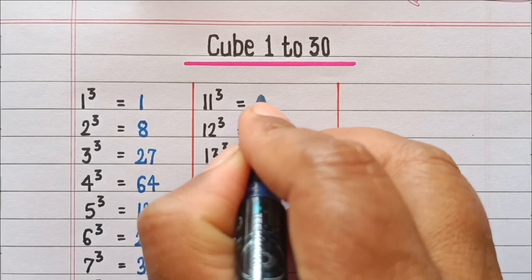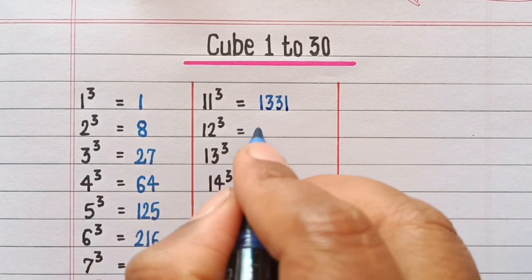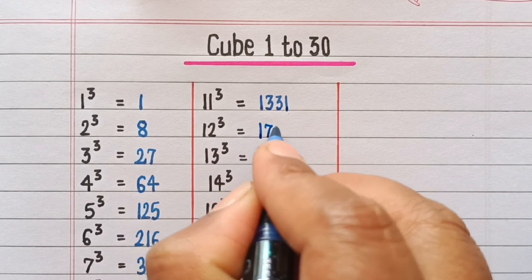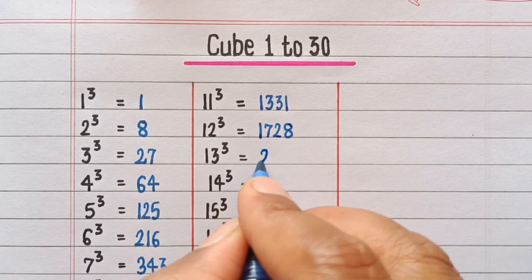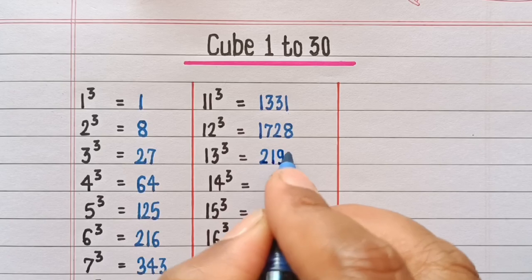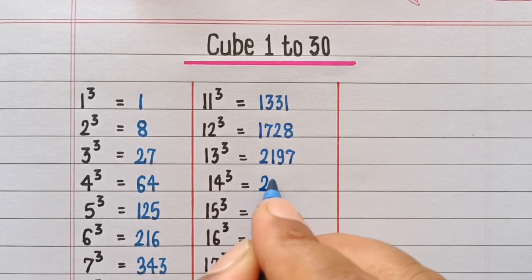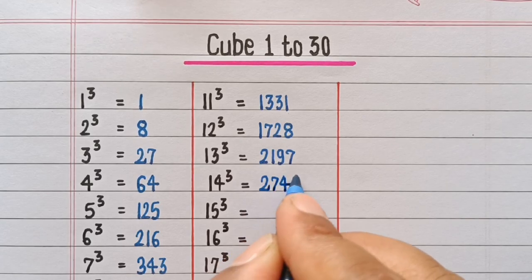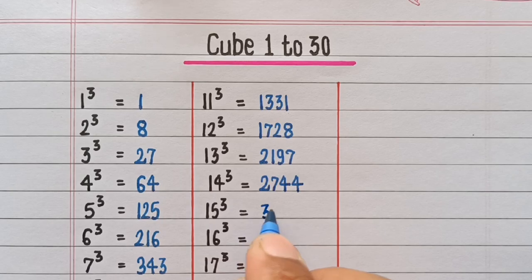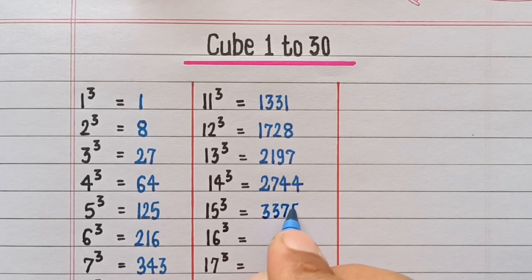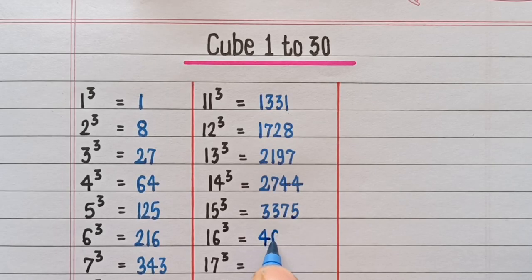Cube of 11 is 1331. Cube of 12 is 1728. Cube of 13 is 2197. Cube of 14 is 2744. Cube of 15 is 3375. Cube of 16 is 4096.